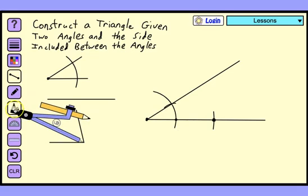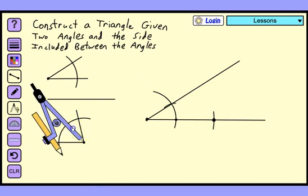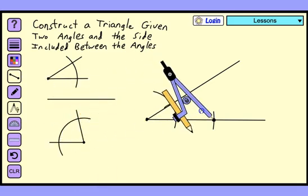We start by drawing an arc that goes through both sides of the angle. From our second vertex, we're going to draw that same arc.